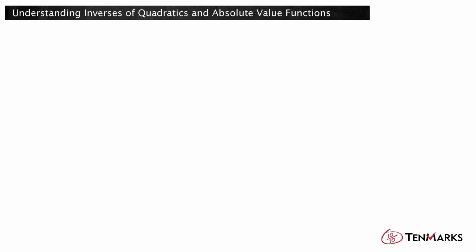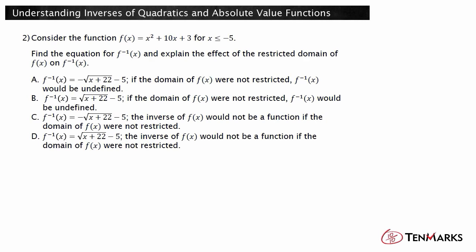Let's look at another example. Consider the function f of x equals x squared plus 10x plus 3 for x less than or equal to negative 5. Find the equation for f inverse of x and explain the effect of the restricted domain of f of x on f inverse of x. To find the inverse, switch the independent and dependent variables and solve for y. First, replace f of x with y, then switch the independent and dependent variables. Solve for y by completing the square.